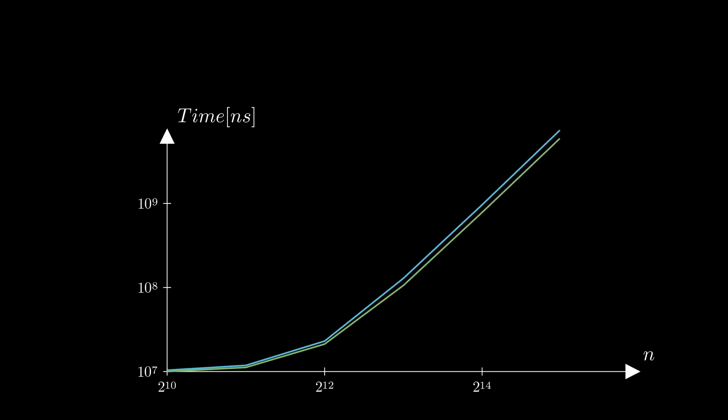We can now run our tile matrix multiplication algorithm and compare its performance with the standard one that we've been using before. Notice that the scales are logarithmic, so the real differences are actually much higher than they appear on the graph.